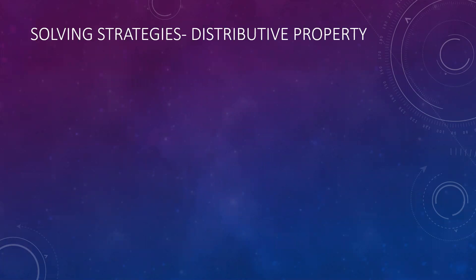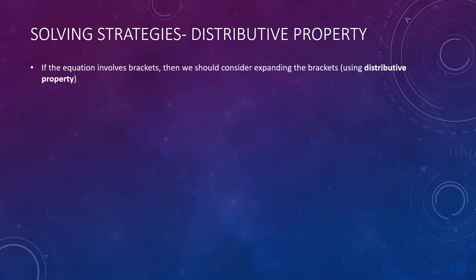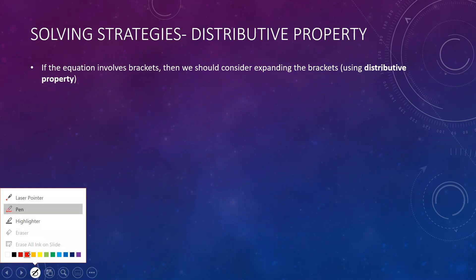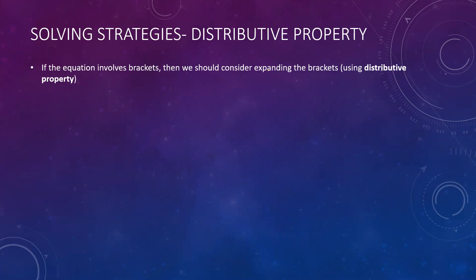Another strategy you might want to try is using something called the distributive property. This is mainly going to come up when you have brackets. The rule of thumb here is if an equation has brackets, it's very likely — not all the time, because there are some examples in the homework where it doesn't happen — but the majority of the time, it's best to expand the brackets, which means you're using distributive property. Distributive property means you take the monomial outside and multiply what is inside.